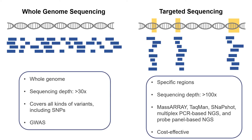Targeted enrichment methods are ideal for known genomes, for example cattle and rice. Given a priori knowledge of the region of interest, there are multiple strategies to perform sequencing based on the number of samples and the number of SNPs, including Sanger sequencing, MassArray, TaqMan, SNaPshot, multiplex PCR-based NGS, and probe panel-based NGS. The most cost-effective method is delivered for your project upon request.